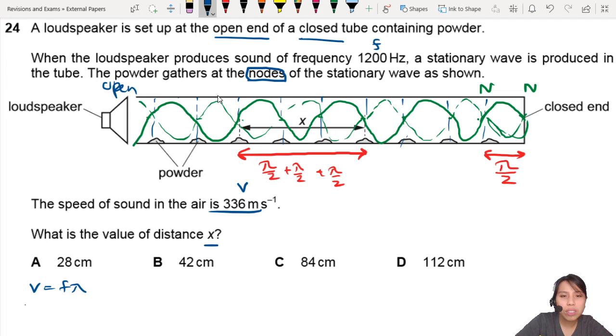And we know v is 336. Usually it's about 330. Frequency is 1200 hertz and lambda. So lambda, we will get a value of 0.28 meter.